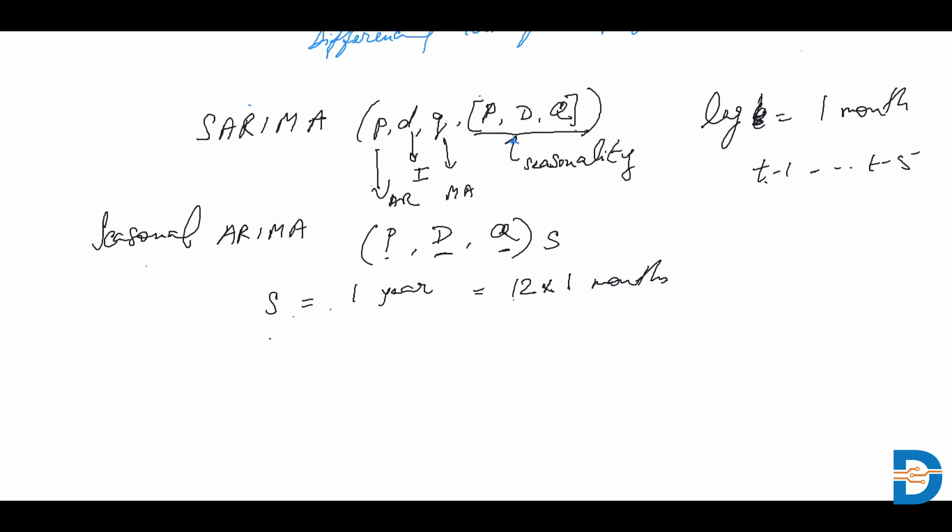If you're talking about two lags where the seasonal element is concerned, we're talking about 24 months or two years. So these are the orders that we would define inside our model.